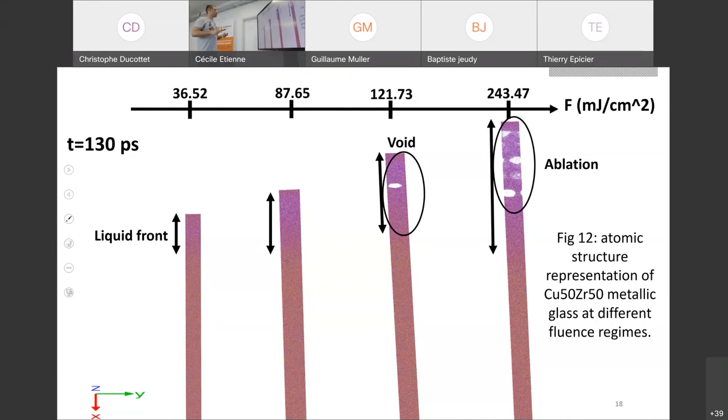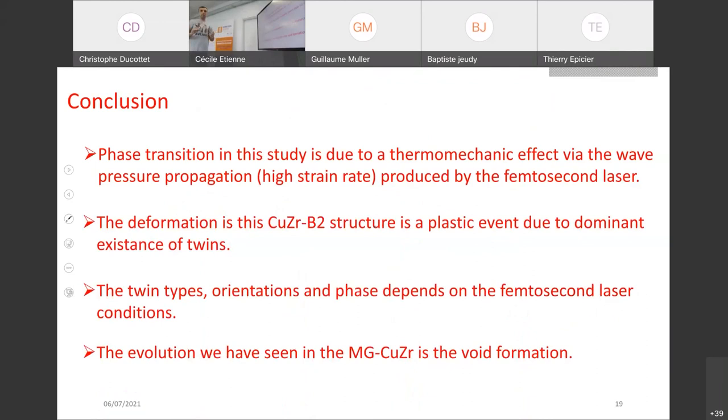Here, what we did, we explored four different fluences or regimes. You can see here formation on the metallic glass on the surface of the medium front. Here we have the ablation regime. But what is interesting is the void formation.